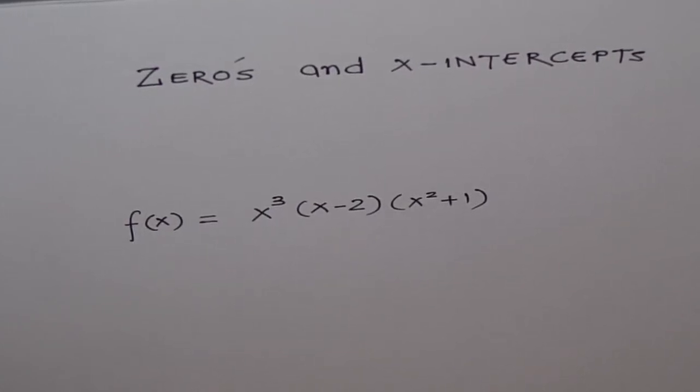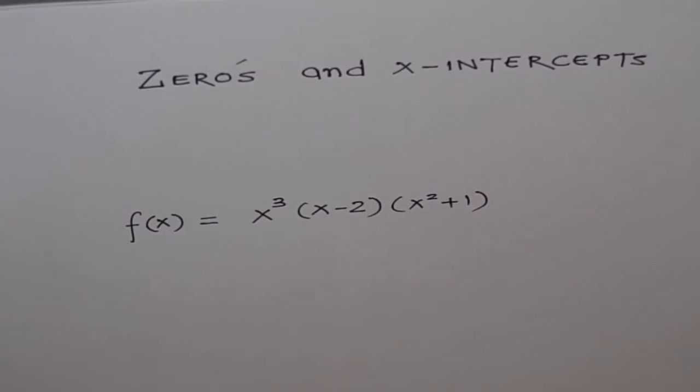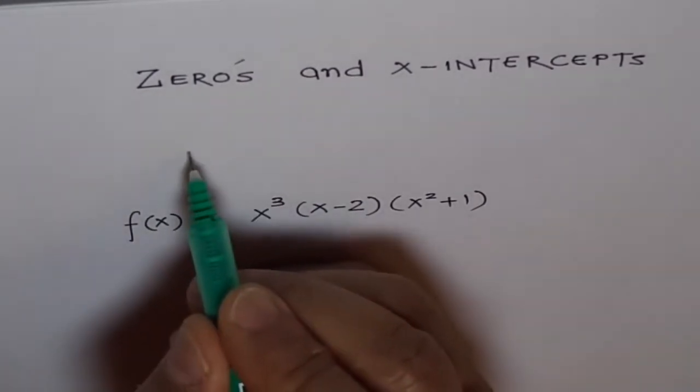Zeros and X intercepts. So many times I have explained this to my students, but still they are not very clear about it. Zeros and X intercepts - what is similarity, what is difference, nobody knows. Now let me try to make an attempt here to explain this concept.